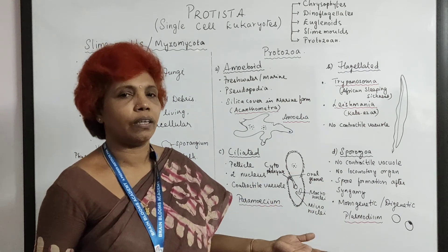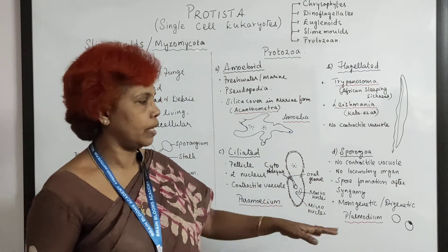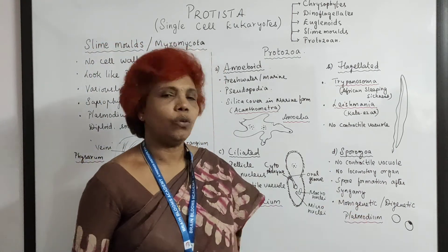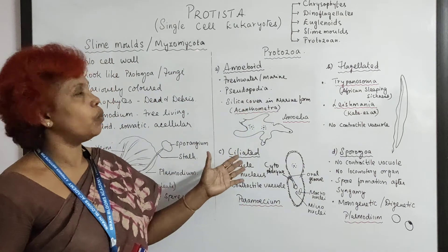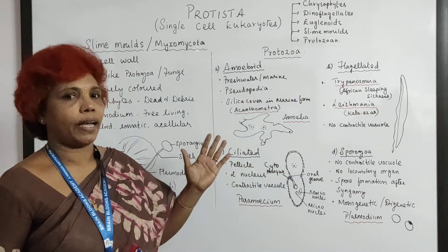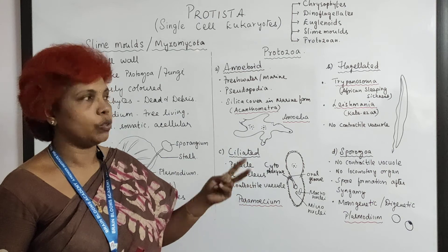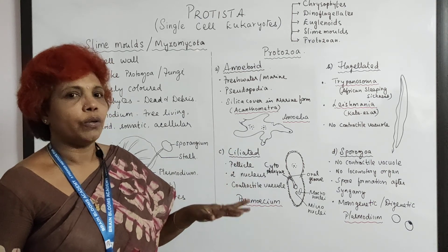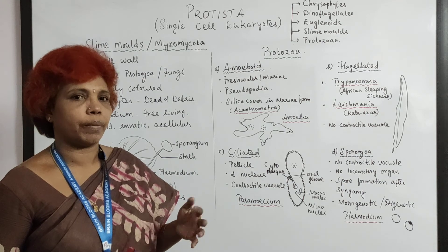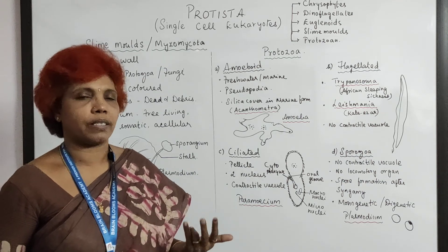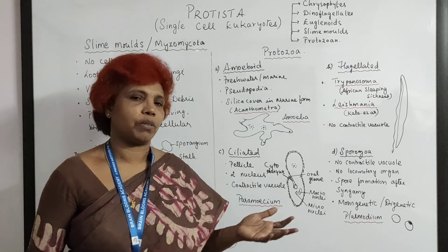Protozoans are classified on the basis of their locomotory organ; sporozoans have absolutely no locomotory organ. This concludes the full protista topic. The first three divisions were covered in the previous video and these two in this video. Please go through both, leave any doubts or comments in the comment section, and thank you — please subscribe.